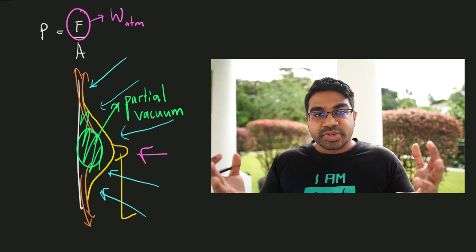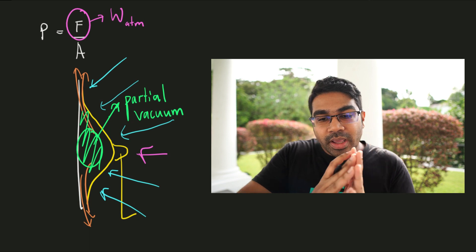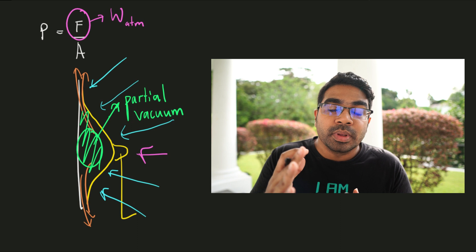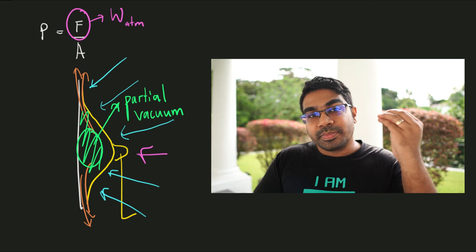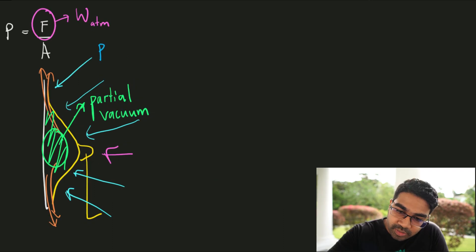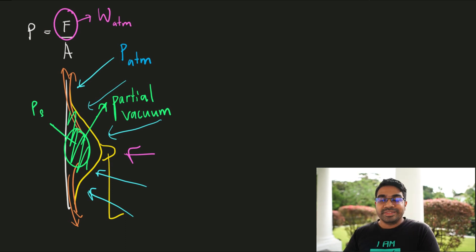And so now, we have two different pressures acting. We have the pressure inside between the suction cup and the wall. And we have the atmospheric pressure pressing down on the suction cup. So what's going to happen now, since the pressure inside is much lower than the atmospheric pressure. This is the atmospheric pressure. Let's label it as the atmospheric pressure. And this is the pressure. I'm going to use subscript S for suction cup, inside the suction cup.